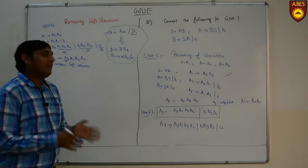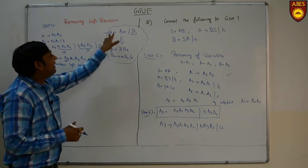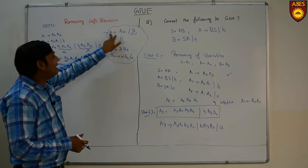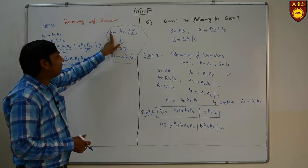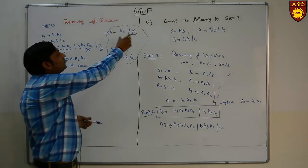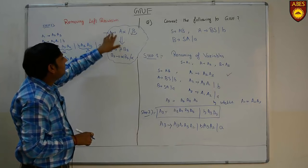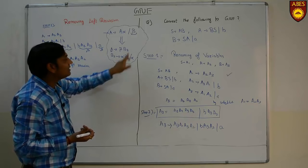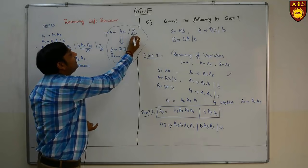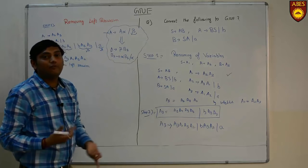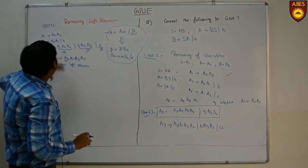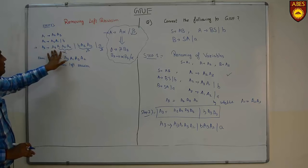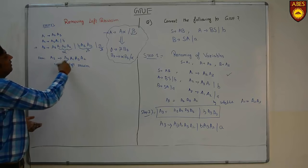If an equation is recursively calling itself on the first variable of the right-hand side, it forms a left recursion. If equation A tends to form A alpha, then the solution is that A would form beta B3, where B3 is given by alpha B3 slash alpha. Among our three equations, A3 is calling A3 itself on the right-hand side, forming a left recursion.